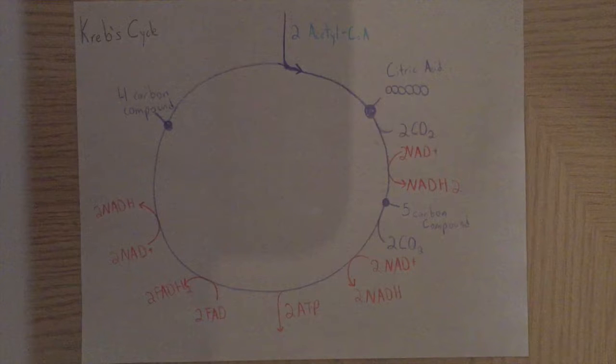Yet another NAD+ is filled, though at the expense of another CO2. The five carbon molecule becomes a four, though converting NAD+ and ADP. Despite the loss of carbon, more NADH is made along with the conversion of FAD to FADH2.